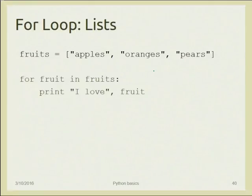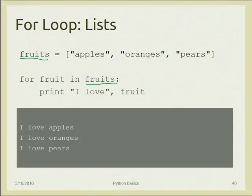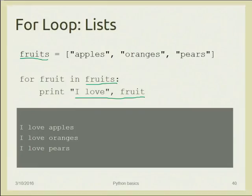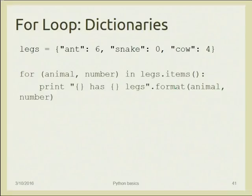With the for loop we can also print each element of a list: 'for a variable in the list: print I love the name of the fruit' — so it prints 'I love apples', 'I love oranges', 'I love pears'. Remember that the format of string, comma, another string, comma works only for concatenating strings with print — and that comma adds a space between the elements.